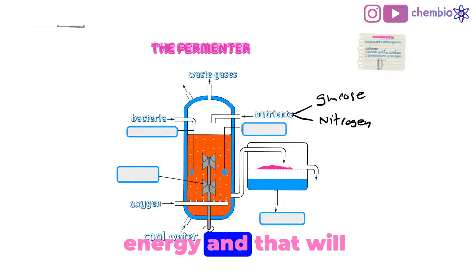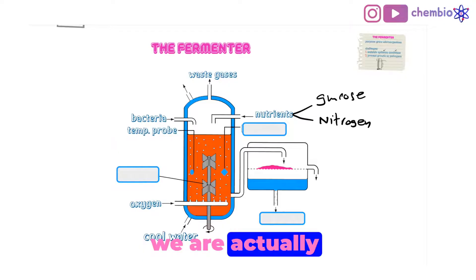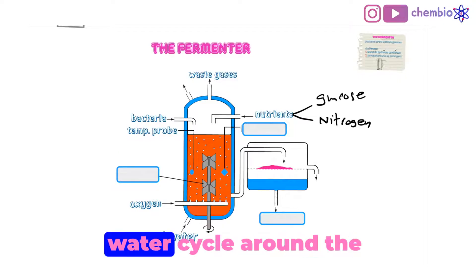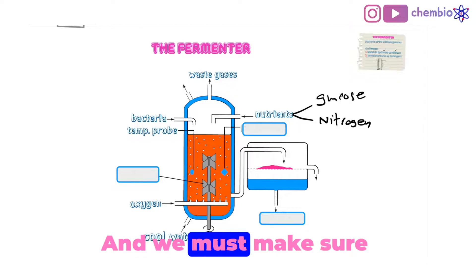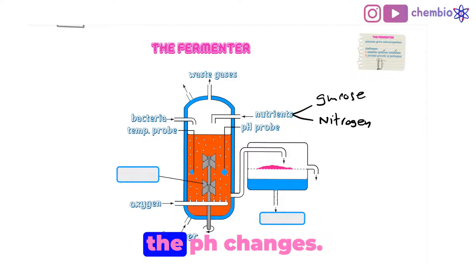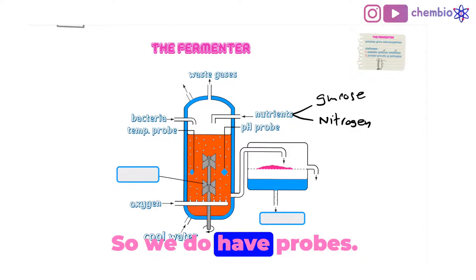We must make sure that we're monitoring the temperature so we know when to run this cold water cycle around the fermenter. And we must make sure that we're monitoring the pH changes. So we have probes.